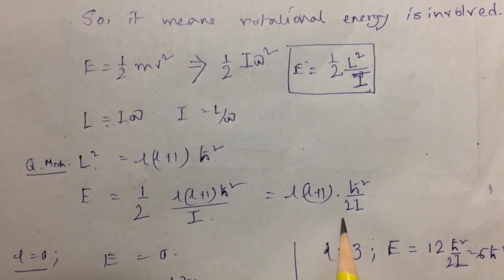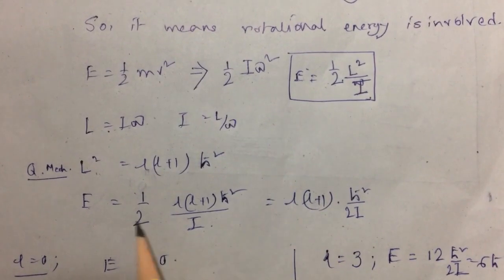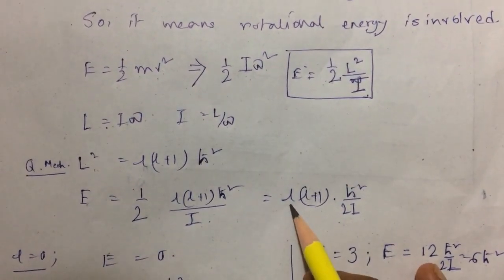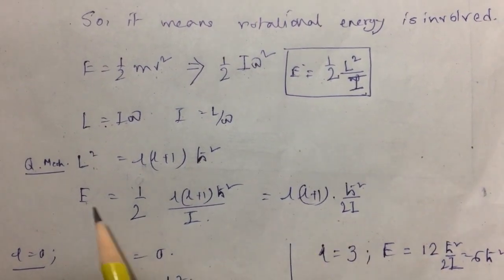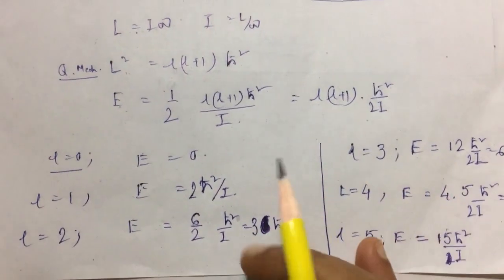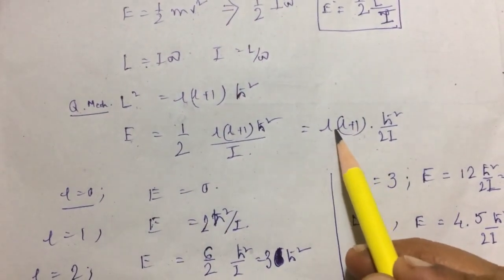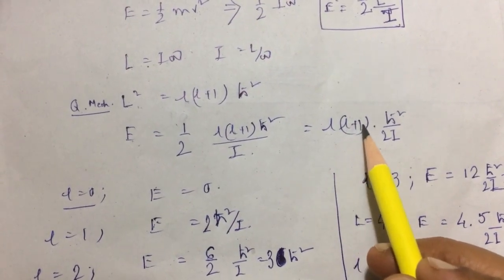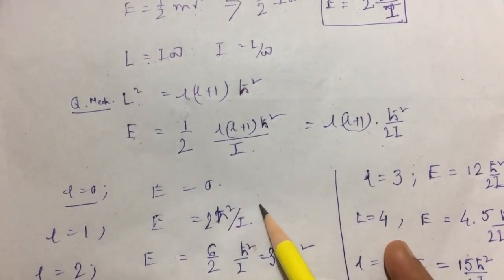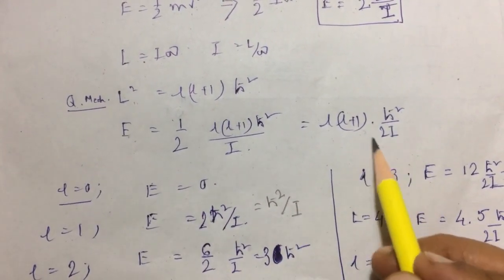Now what is the value of this rotational energy for ground state? That is L equal to 0. If we put L equal to 0, E is also equal to 0. Now what about the other L values? If we have L equal to 1, then it's 1 into 1 plus 1, that is 2, so it's 2ℏ²/2I, which is equal to ℏ²/I.